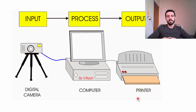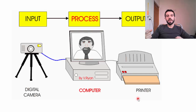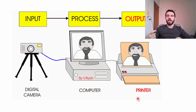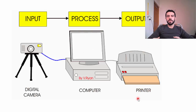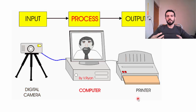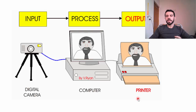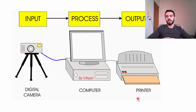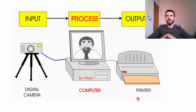For example, in this simple system we have a camera. The camera takes a picture of someone — that's input to the computer. In the computer you can use Photoshop to process the image, apply some operations to it, and then output or print the image using a printer. That's a simple system.